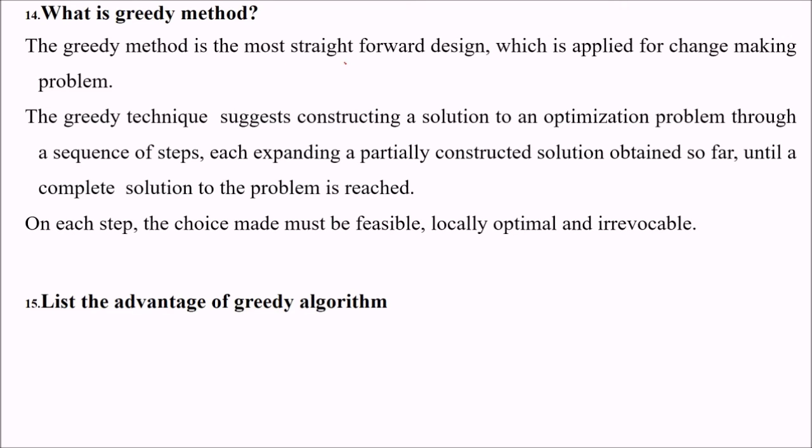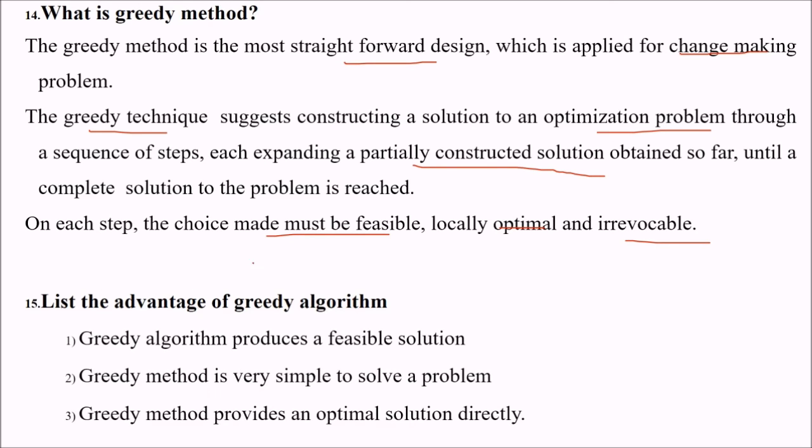What is greedy method? What does the name suggest? Greedy means it wants something always. It is a more straightforward design which is applied for optimization problems. It suggests constructing a solution to an optimization problem through various steps, each expanding a partially constructed solution obtained so far until a complete solution of the problem is reached. In each step, the choice must be feasible or greedy, locally optimal and irrevocable. So greedy is involved everywhere, optimality, feasibility and irrevocable at each step. What is the advantage of greedy algorithm? Greedy algorithm produces a feasible solution. Greedy method is very simple to solve a problem and also it provides an optimal solution directly.